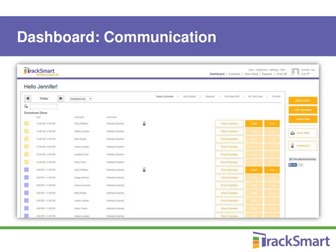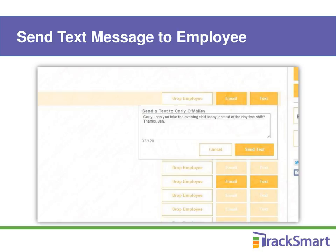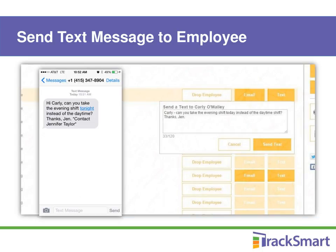You've got several communication options with your employees. I can click on the Email Staff button and this will send an email to all my staff with email addresses available, if I just want to communicate without sending a schedule. If I want to communicate with an individual employee, I can filter on the dashboard using the drop-down in the upper left to see who's scheduled today or any day I choose, or filter to show all employees. I can search by name in the search box, then click the Email button to the right to send an email to that employee only. If there's a mobile phone number on file, I can also send a text message directly from TrackSmart Scheduling to the employee by clicking the Text button, typing in your message, and clicking Send Text.